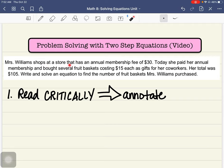So let's read the problem. Mrs. Williams shops at a store that has an annual membership fee of thirty dollars. That seems important. So the annual membership fee is thirty dollars, kind of like Costco. They have an annual membership fee. Today she paid her annual membership and bought several fruit baskets costing fifteen dollars as gifts for her coworkers. Lots going on here today.